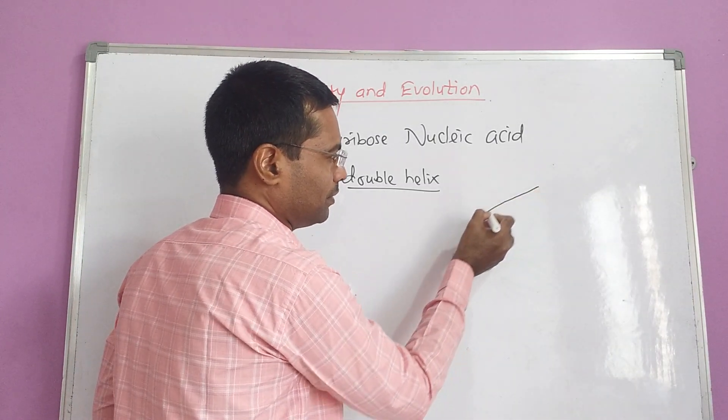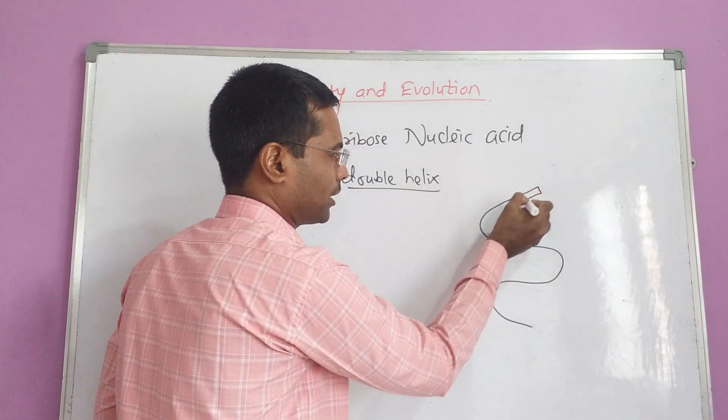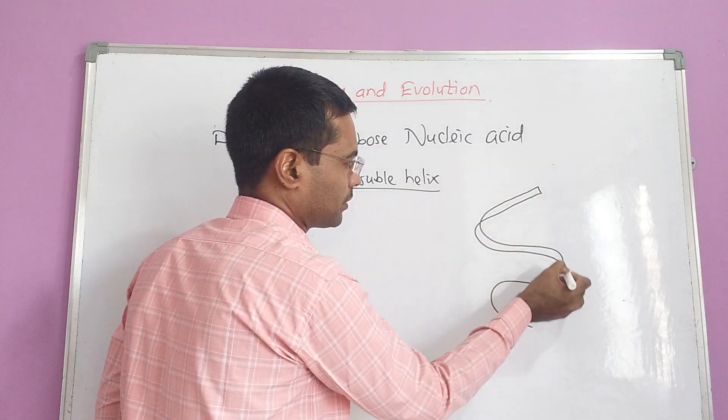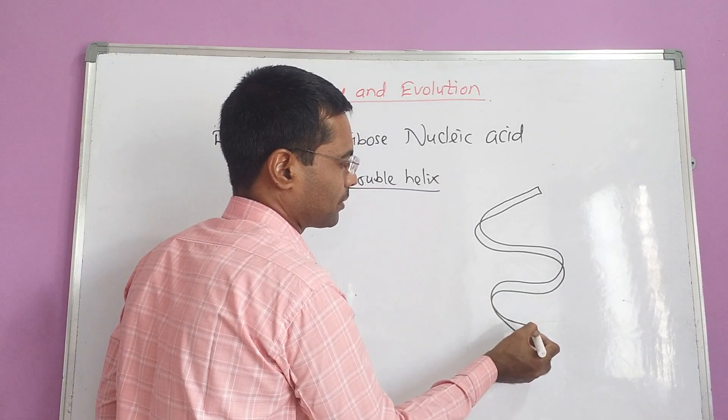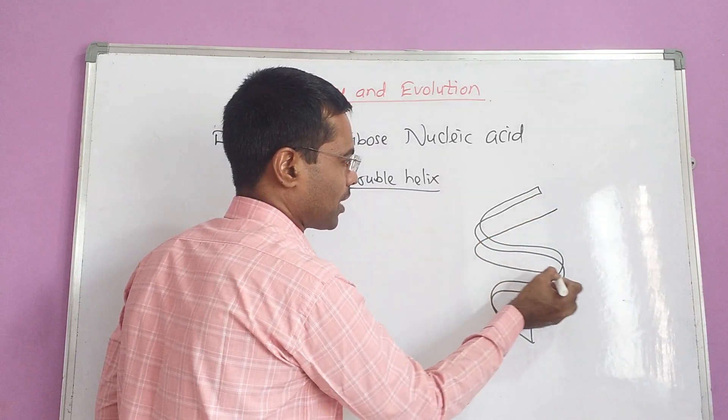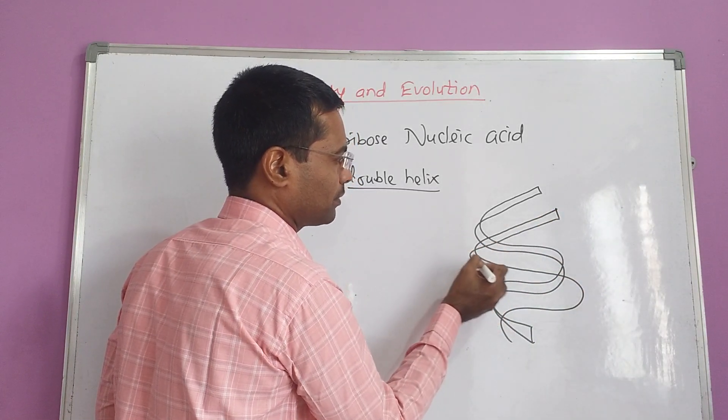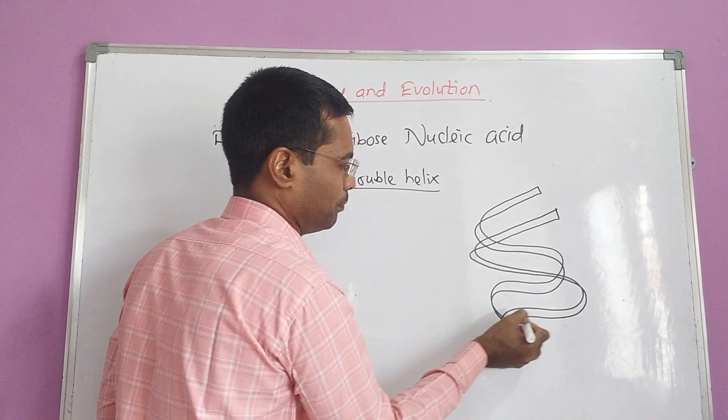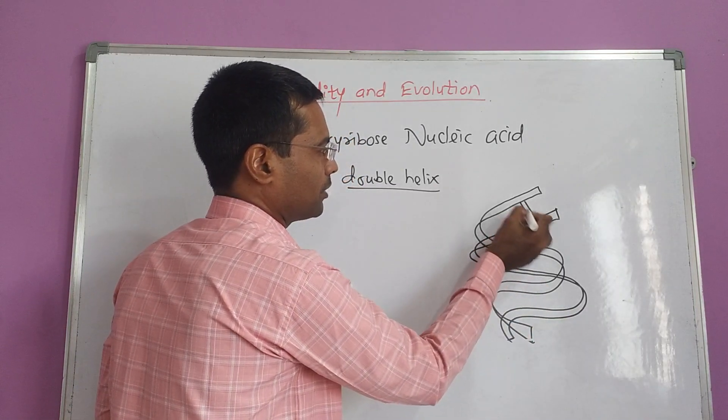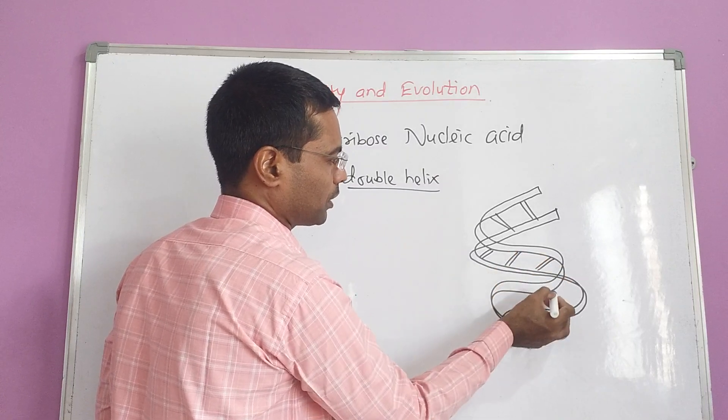See here, this is a single strand. You can draw this strand like this. This is a single strand. And another strand is parallel to this strand. You can draw the diagram, you can try it also. Very simply. This is a simple explanation. And these two strands are connected to each other in this way. This is actually the schematic diagram of the DNA.